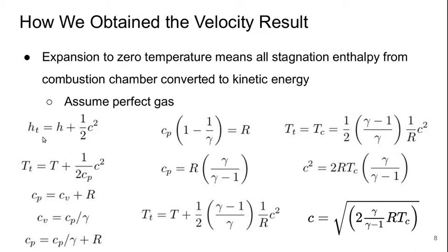And for a perfect gas, we can write this in terms of temperatures. So the stagnation temperature is the temperature plus one over two Cp, where this is the specific heat at constant pressure, times c squared.